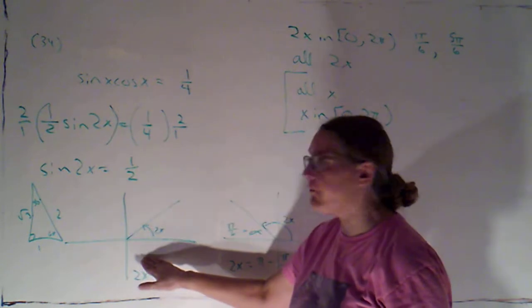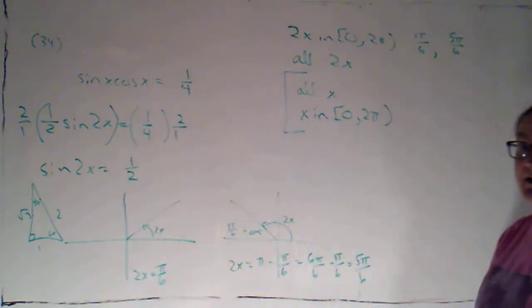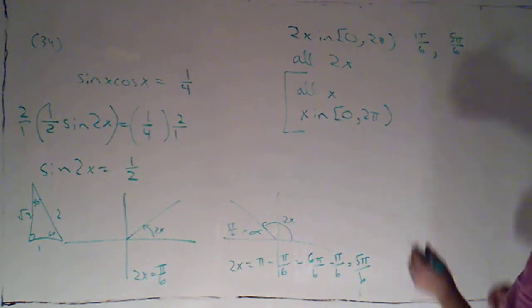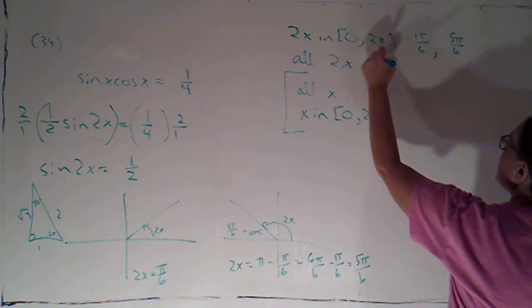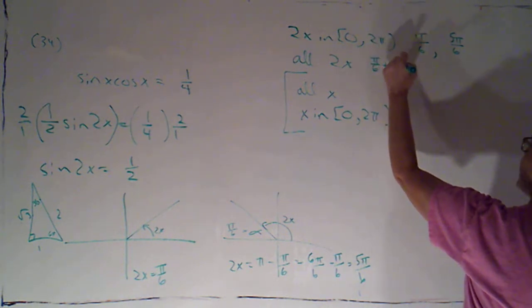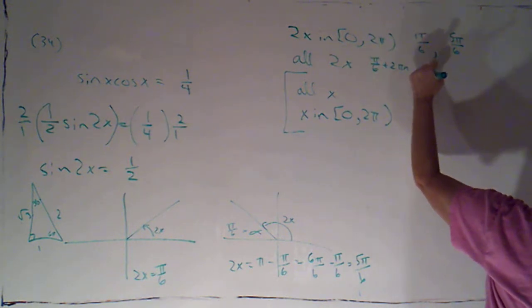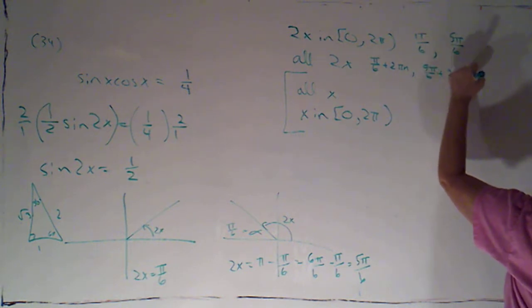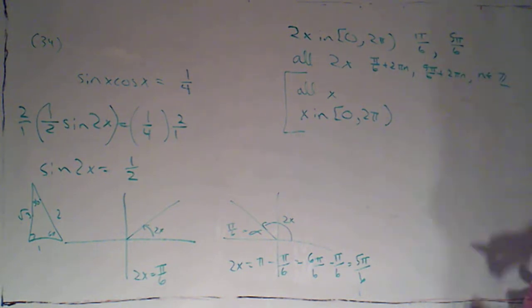Okay. And again, no solution in quadrants 3 or 4 because sine would be negative there. Okay. So all values of 2x would be pi over 6 plus 2 pi n and 5 pi over 6 plus 2 pi n where n is an integer.